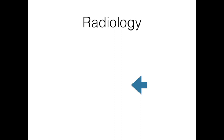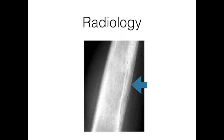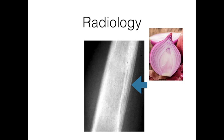The next thing that you could do is take an X-ray, where you could find in around 50% of cases the lamellated pattern of periosteal reaction called the onion skin appearance.